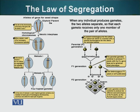In meiosis, we have two homologous chromosomes, which have not identical but similar genetic information. So in our heterozygous plant, we had two chromosomes: one containing the capital S gene, the other containing the small s gene.